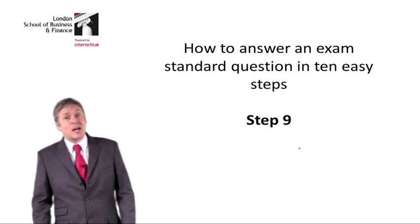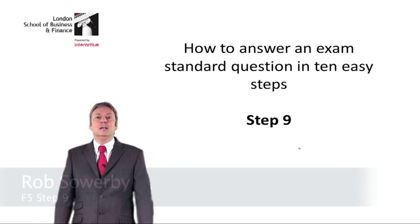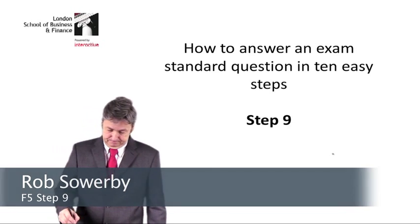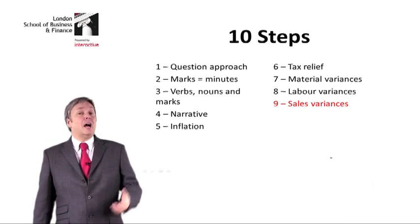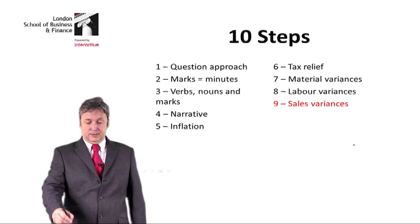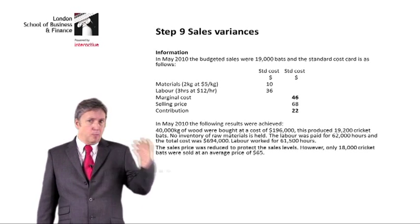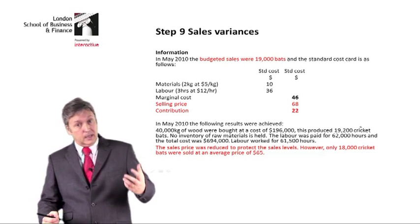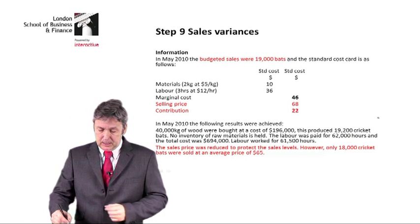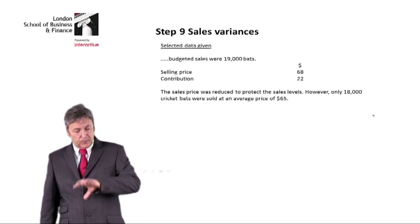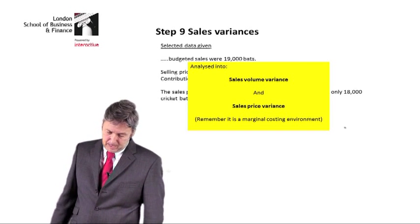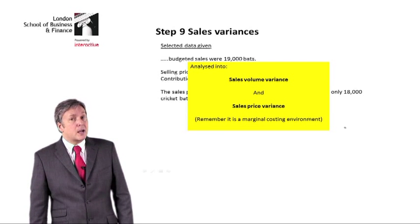How to answer an exam standard question in 10 easy steps — step 9. We're now going to look at the sales variances. We go back to the source information and highlight the information that is needed for the sales variances. If we take that separately, that's the information that's required.